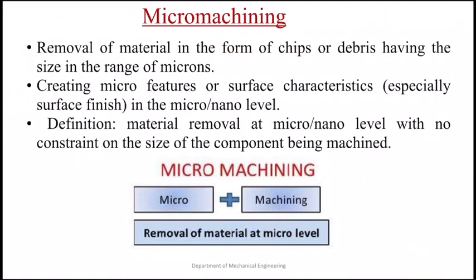We start with micro machining. Micro machining includes all cutting operations in which material is removed at the micron level. It is the most basic technology for the production of miniaturized parts and components. Micro fabrication deals with all kinds of manufacturing processes at micro and nano level — that is, the removal of material in the form of chips or debris having size in the range of microns, creating micro features or surface characteristics at micro or nano level. Micro machining can be defined as material removal at micro or nano level with no constraint on the size of the component being machined.